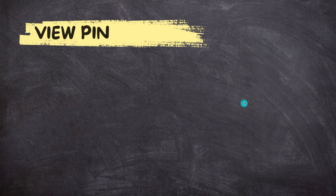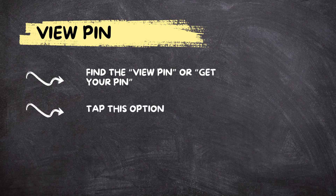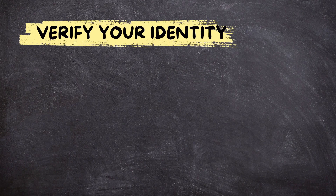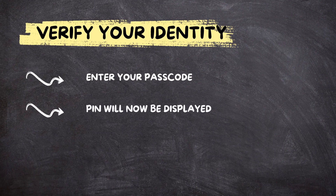Next, to view your PIN, under card management you should see an option that says 'View PIN' or 'Get Your PIN'. Tap this option. The app will then ask you to verify your identity by entering your passcode or using biometric data such as your fingerprint or Face ID. Once verified, your PIN will be displayed.